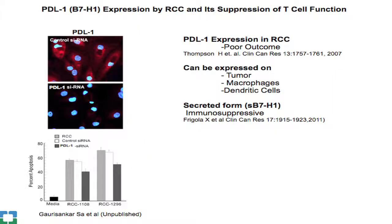Regarding PD-L1: renal tumor cell lines express PD-L1, and downregulating it with siRNA reduces the ability of these tumors to induce apoptosis in T cells. PD-L1 expression in kidney cancer correlates with poor outcome and is expressed not only on tumor cells but also on macrophages and dendritic cells, and there is also a secreted form.